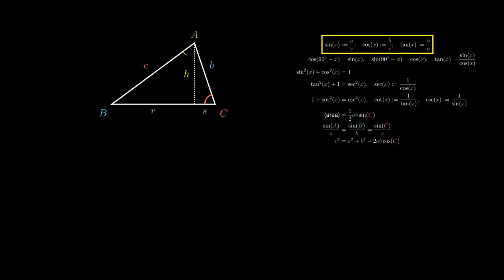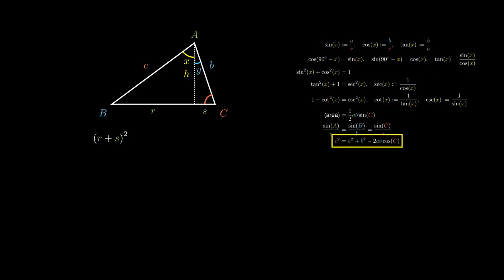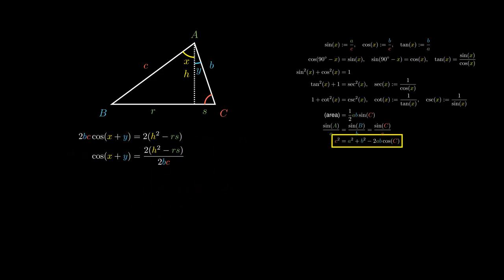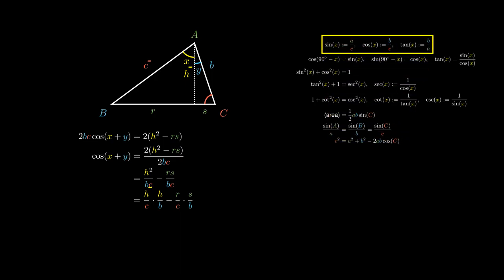Now let's include angles X and Y. By considering the expression R plus S all squared and applying the cosine rule on sides B and C with angle X plus Y, we can write 2BC cosine of X plus Y in terms of everything else. By the Pythagorean theorem, C squared minus R squared and B squared minus S squared each equal H squared. Cancelling excess terms, we write cosine of X plus Y as H over C times H over B minus R over C times S over B. These are trigonometric expressions of X and Y, simplifying to cosine X cosine Y minus sine X sine Y.